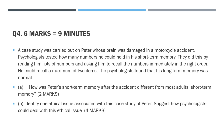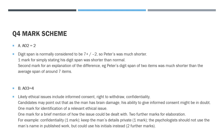Mark scheme for part A - it's application. One mark for noting Peter has a digit span of only two. The second mark comes from the comparison: this is much smaller than that of a normal adult, which is seven plus or minus two. You need both the numbers and the comparison to get both marks.